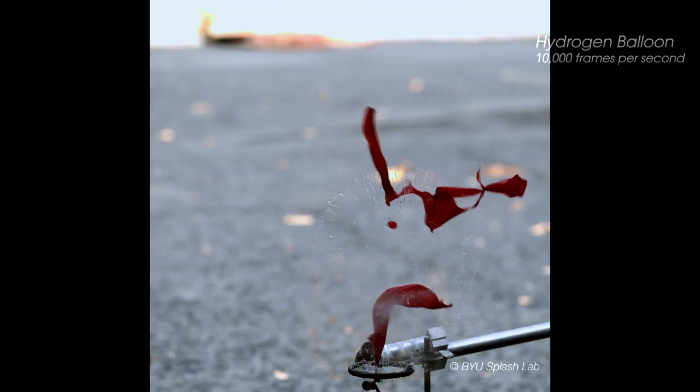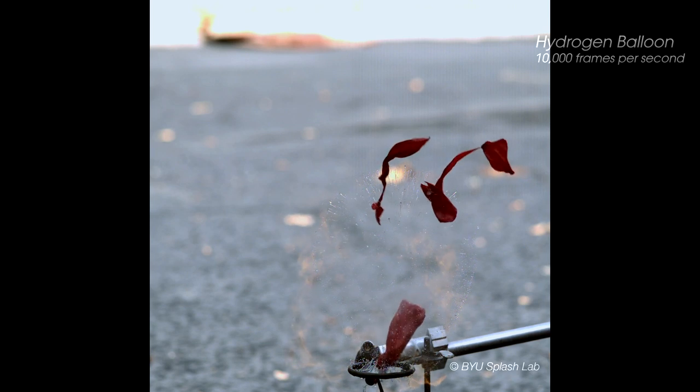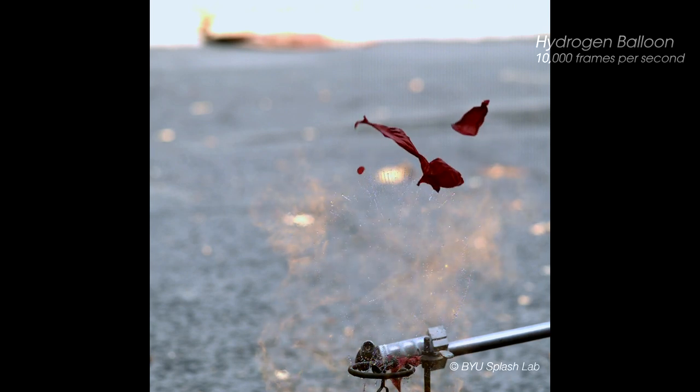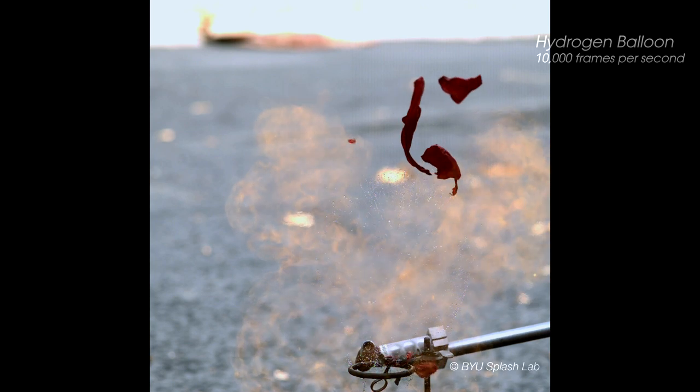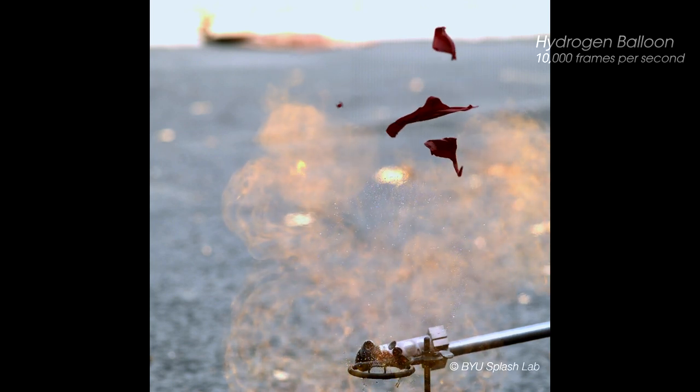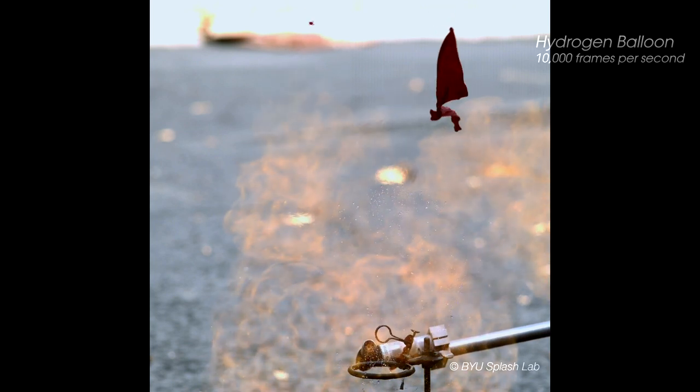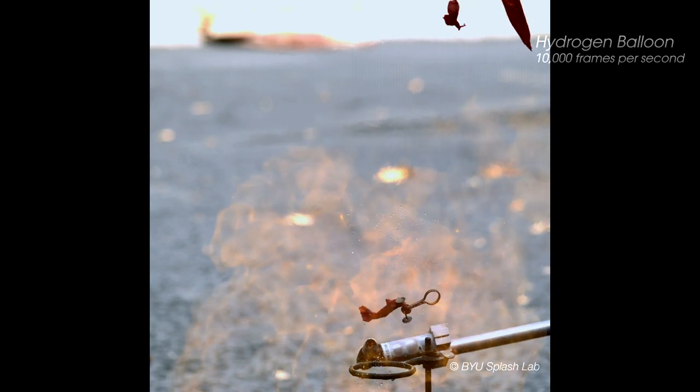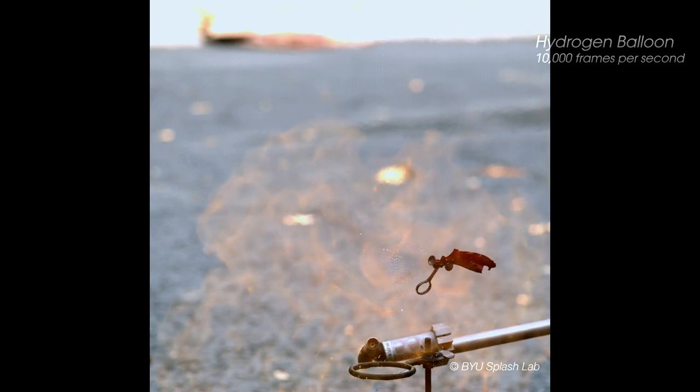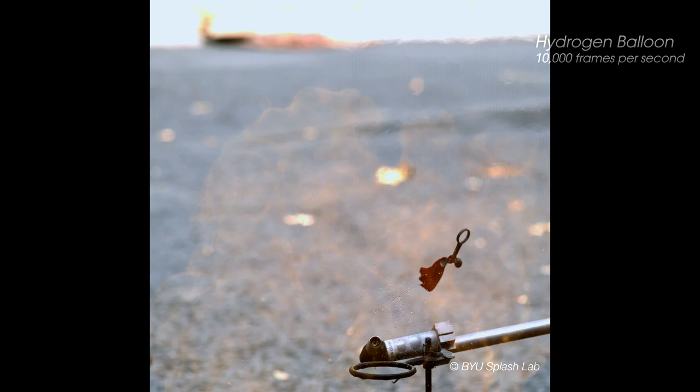This balloon actually has some tiny water droplets on the surface, so you can see, when it ignites, the droplets initially maintain their shape and then fall downward by the force of gravity. You can see the heat waves at the top of the explosion, which changes the index of refraction of the air and causes the background to become distorted.